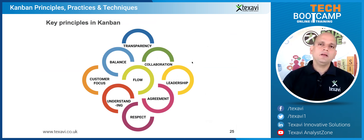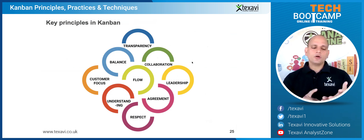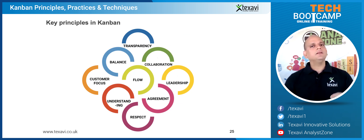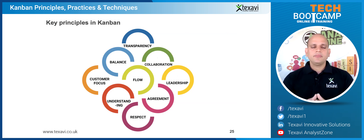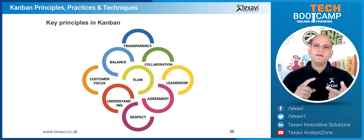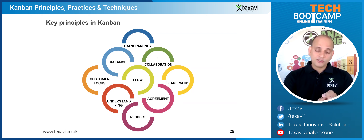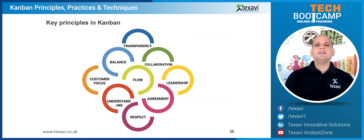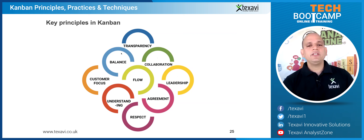Like typical agile methodology, there are three pillars of agile methods. It doesn't matter whether you're talking Kanban, Scrum, Lean, DDD, FDD, MDD — whatever it is, they all need to have transparency, inspection, and adaptation. These are the three foundation pillars of any agile methodology.